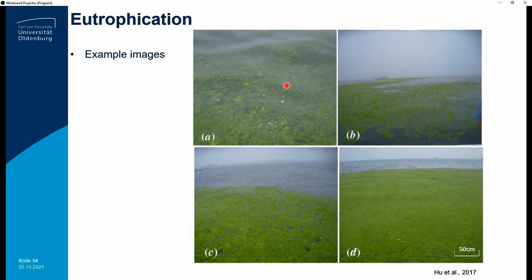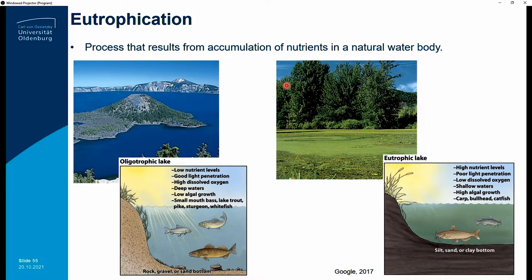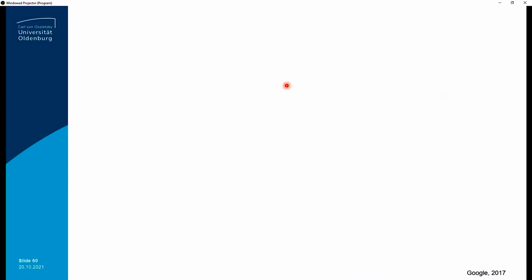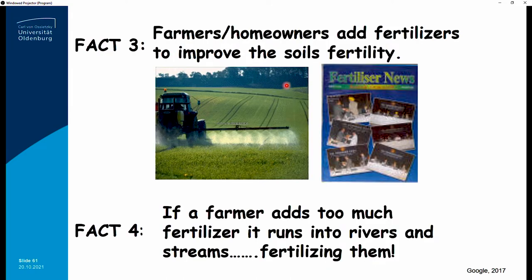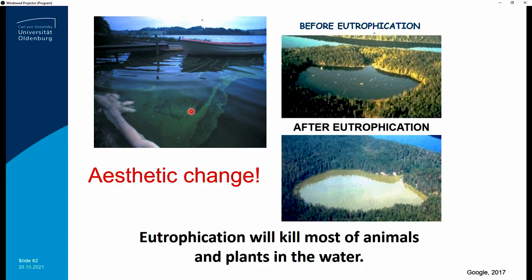Cleaning is easier in some cases — for example with floating material like hyacinth. But in other cases, like dissolved and particulate material mixed in the water column, it's quite difficult to clean. In most cases, eutrophication will kill most of the animals and plants in the water column.